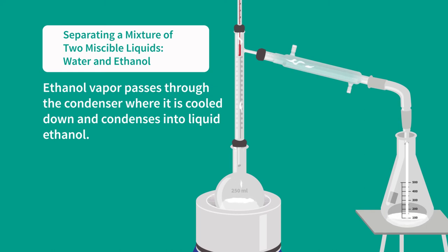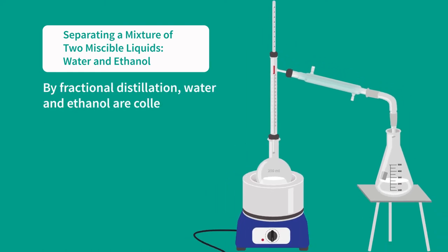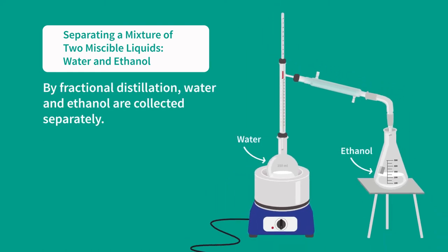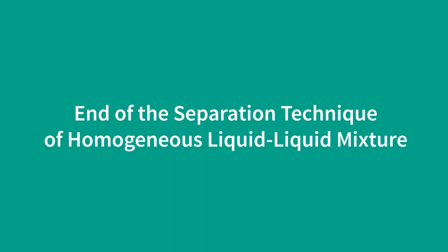The ethanol vapor is cooled down in the condenser and condenses into liquid ethanol. Liquid ethanol flows down from the condenser and is collected in the Erlenmeyer flask. By fractional distillation, water and ethanol are collected separately: water is recovered in the distillation flask while ethanol is collected in the Erlenmeyer flask.